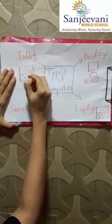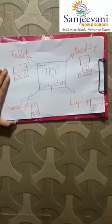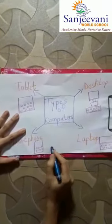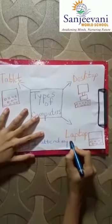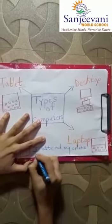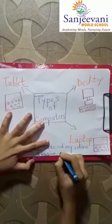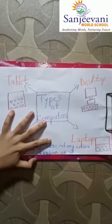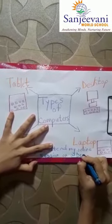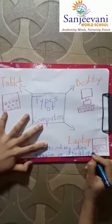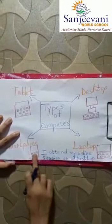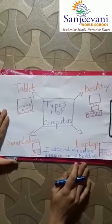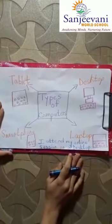Now once you complete your drawing, I want you all to write an important line using any color of crayon. Write: 'I attend my online session on a ___.' What do you attend your online session on? If you use a desktop, write desktop; if a laptop, write laptop. With teacher's help, one by one you will write this full sentence. So we will all begin now and do the activity.